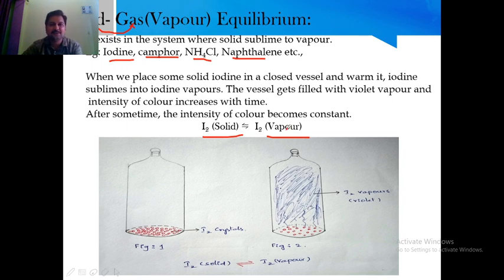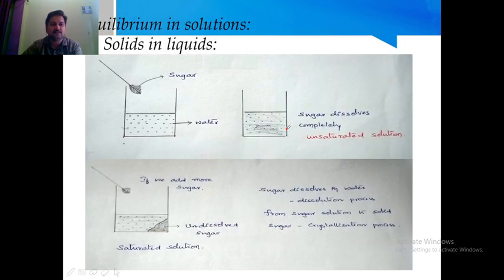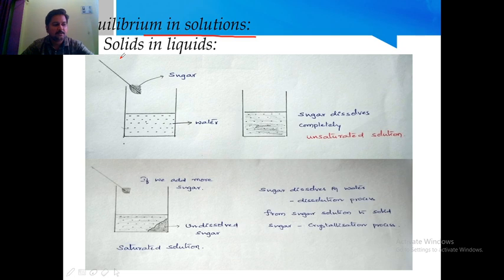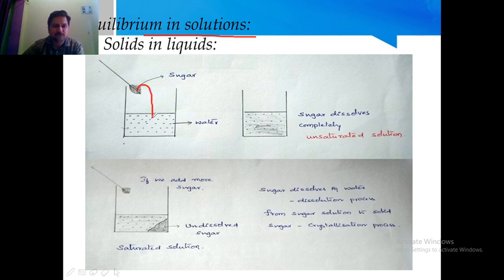These are the three phase transformations in physical equilibrium. We can also study equilibrium in solutions — mixtures of two or more components. Taking a beaker with water and dissolving some sugar in it forms a sugar solution. The water has the capacity to dissolve the sugar completely, forming an unsaturated solution.